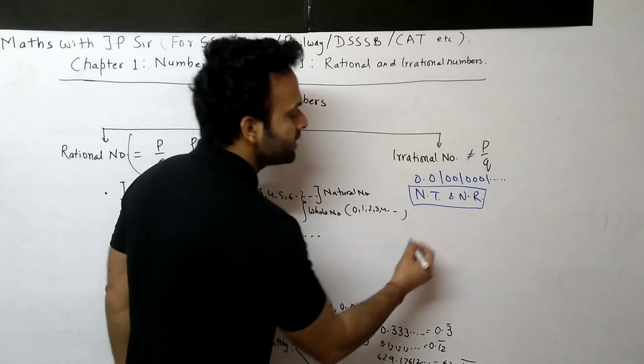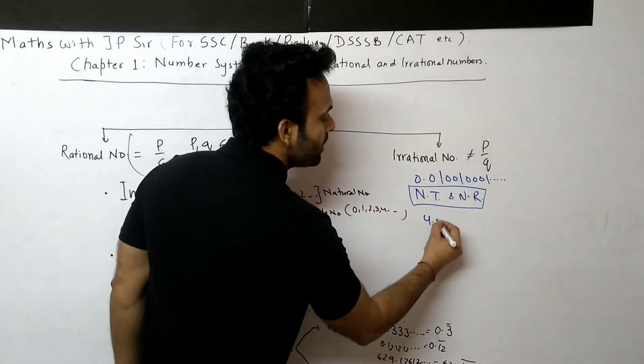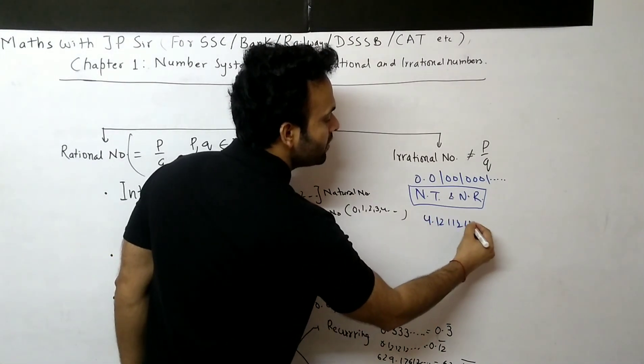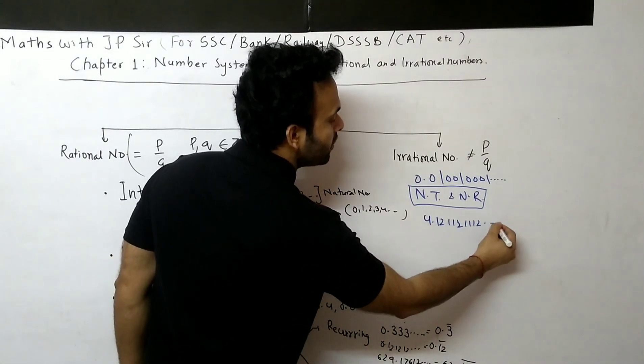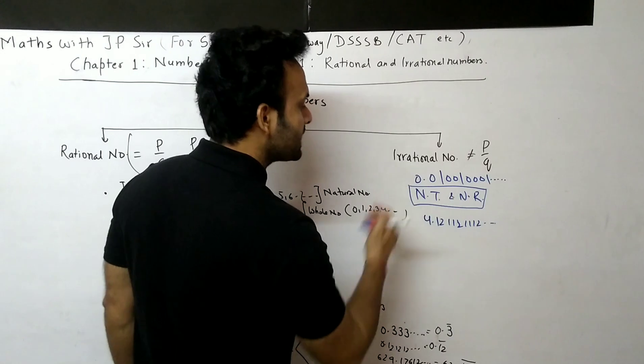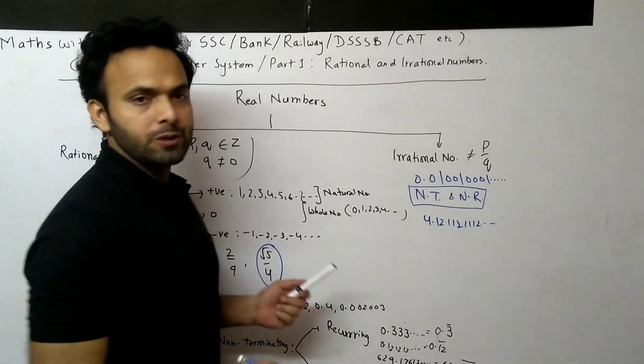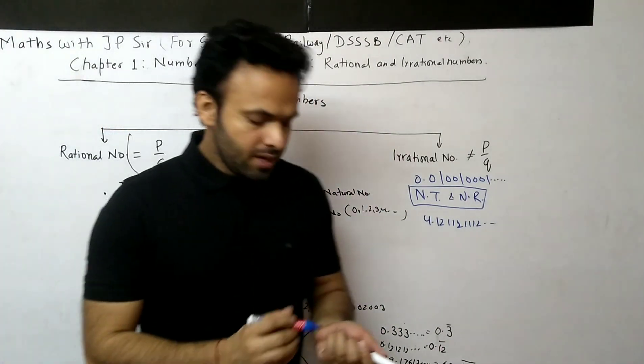Let's take some more examples. 4.121121112... — again, this is a non-terminating, non-recurring decimal, so it is an irrational number.